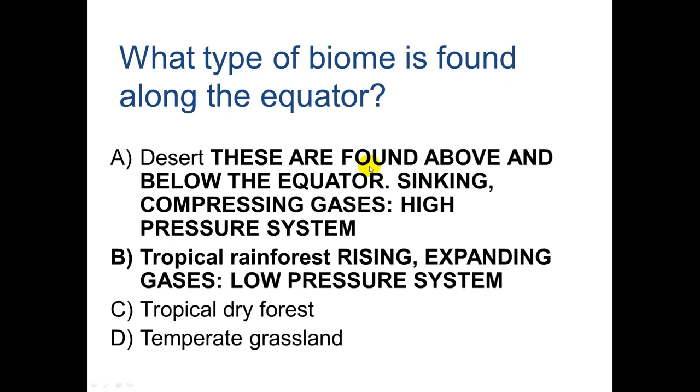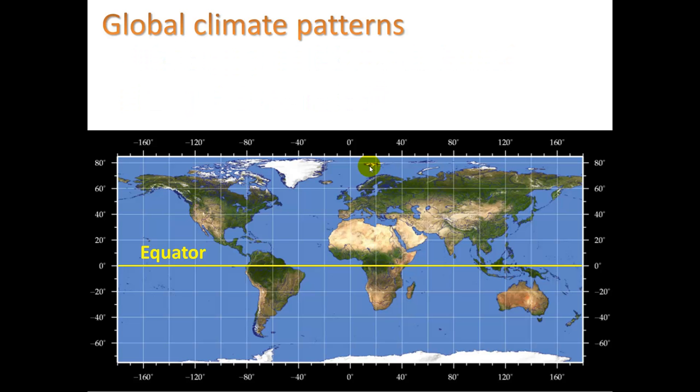So we can say here, deserts, these are found above and below the equator because of sinking, compressing gases, causing high pressure systems. We can see that also equator right here, rainforest, Amazon rainforest, African rainforest, South Pacific rainforest. And then just above that at 20 degrees latitude, we see the Saharan desert, Middle Eastern desert, Mexican desert. 20 degrees south, we see South African desert, the Australian desert, which we call the outback. And I guess this would be the Andes desert maybe.